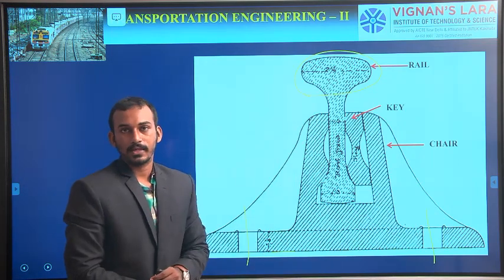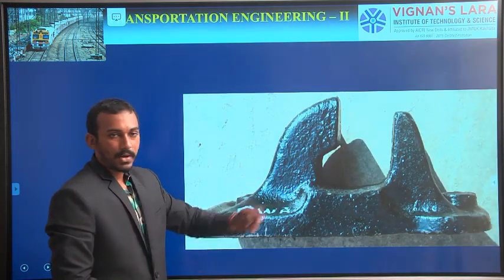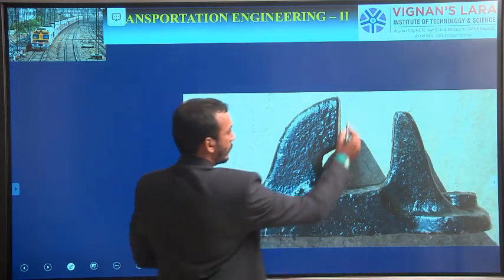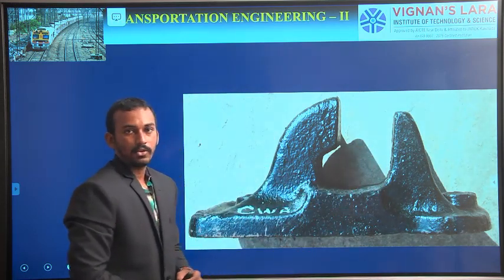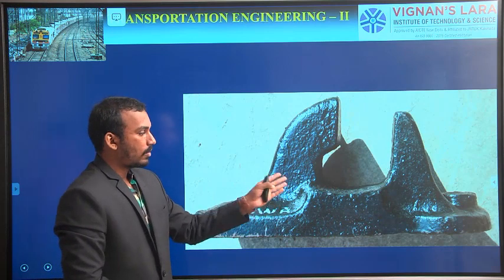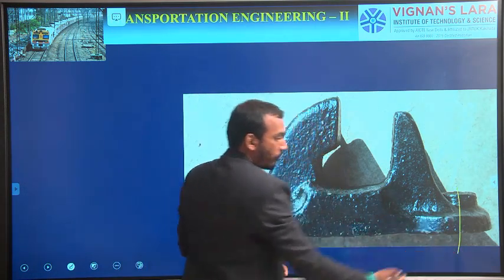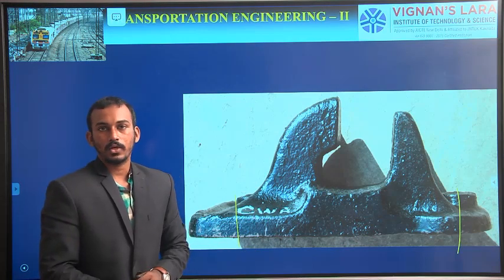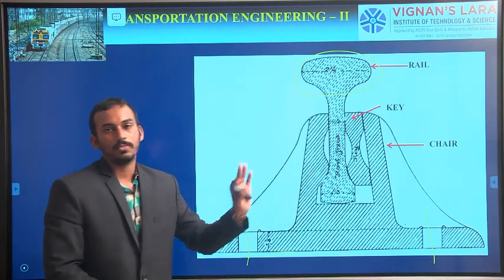Here we use round spikes to fix chairs to sleepers. See another image — this is a practical image of a chair. In the center, we provide the rails — whether bull-headed rails or double-headed rails. Here we have some holes to fix the chairs to the sleepers. It is very difficult to connect bull-headed rails to the sleepers directly, that's why we use chairs externally.